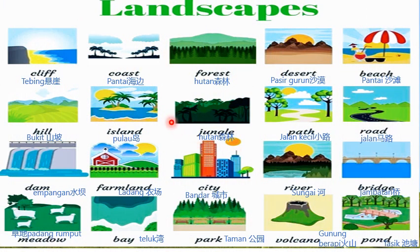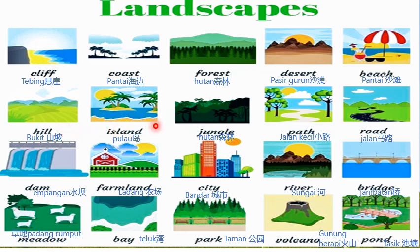These are the different landscapes that we have. The first one is cliff, coast, forest, desert, beach, hill, and island.